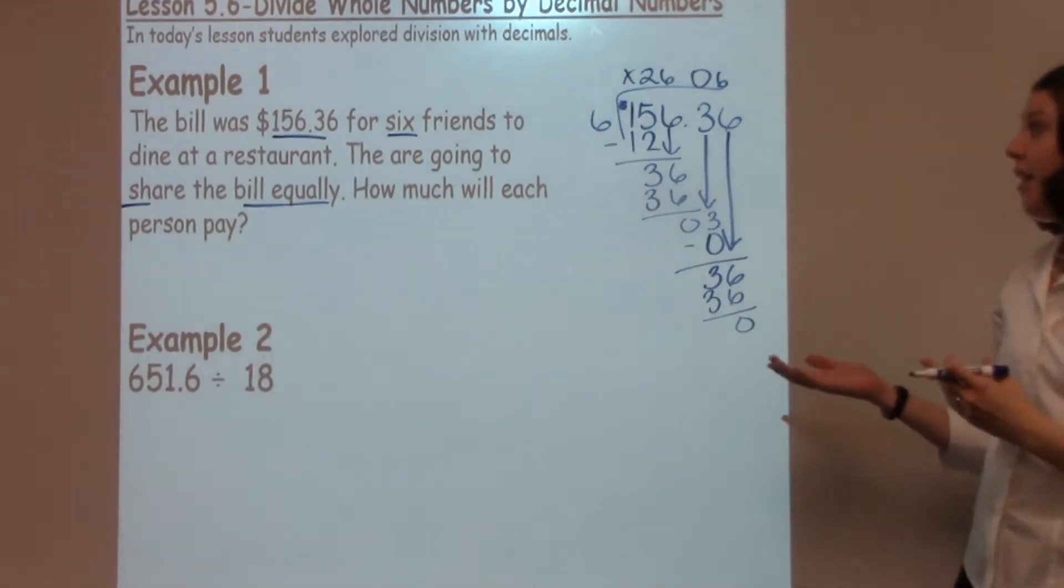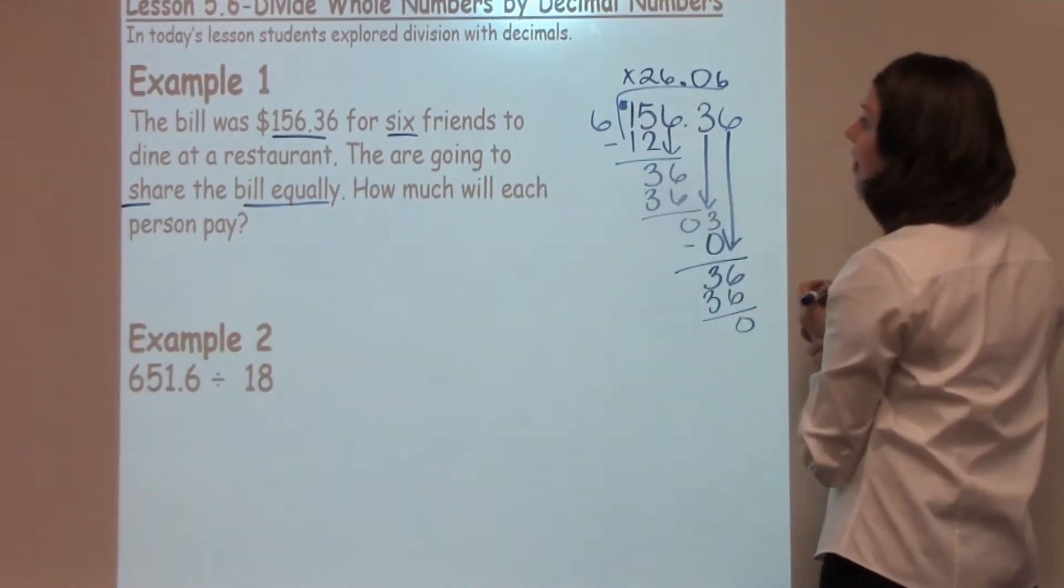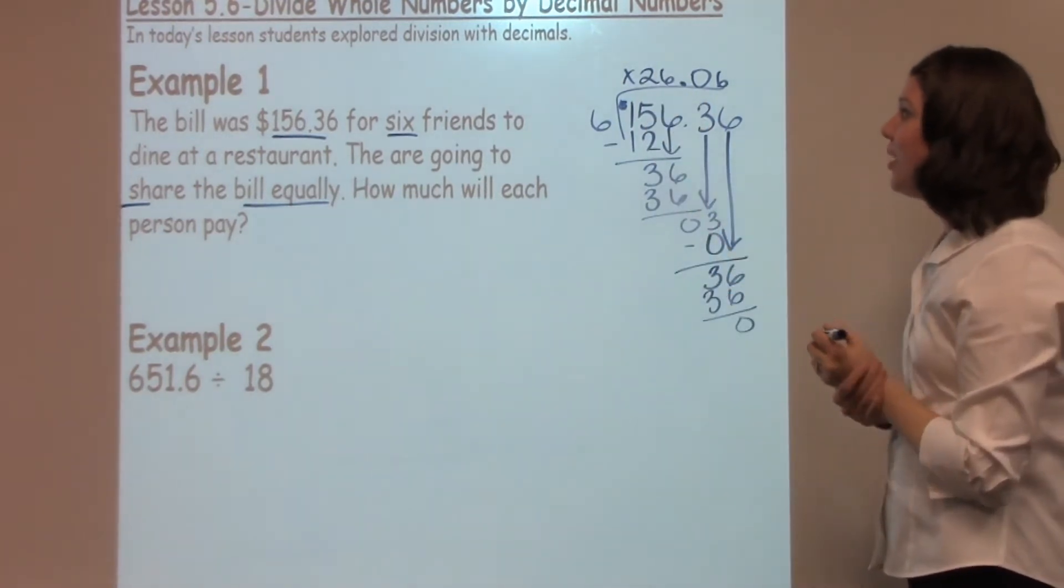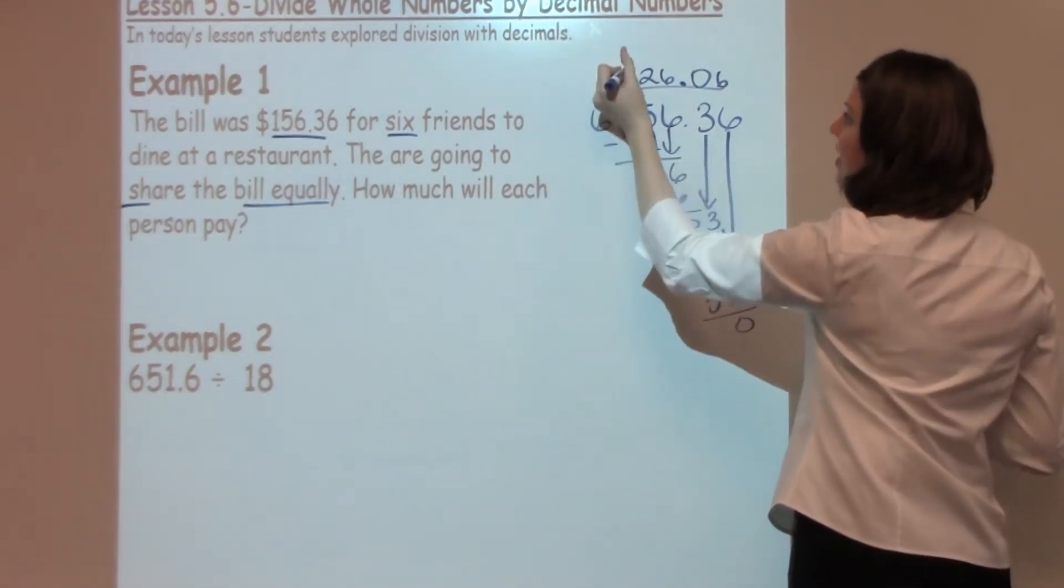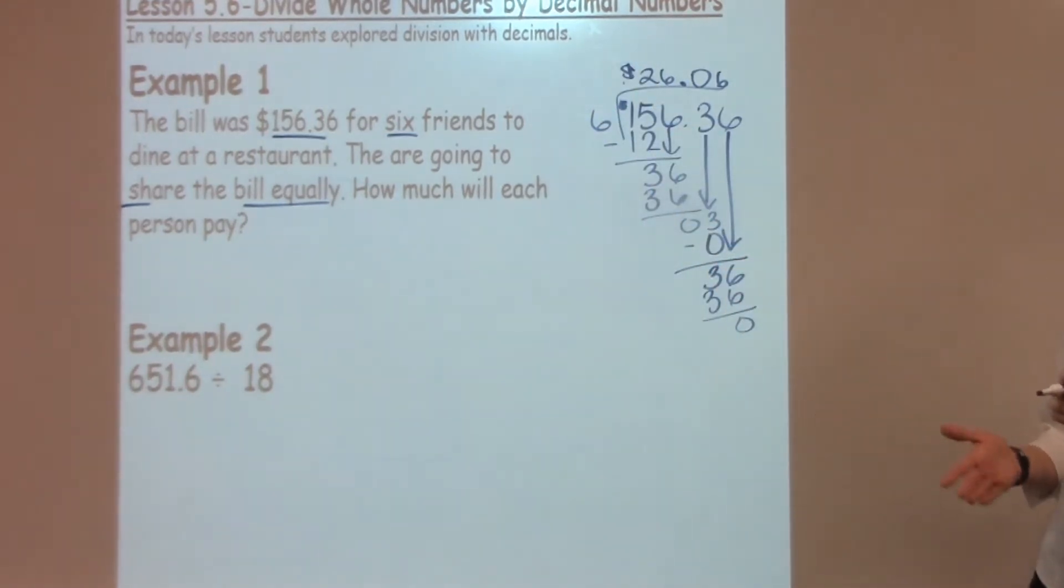Now, as you're noticing, I didn't put a decimal in there. As I was dividing, I just need to pop my decimal up in there, and then I have my answer of twenty-six dollars and six cents. It's really important to make sure that you write the dollar sign to signify that it is money.